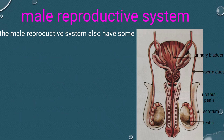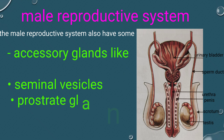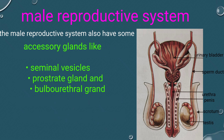The male reproductive system also has some accessory glands like the seminal vesicles, prostate gland, and bulbourethral gland. Secretions of these glands constitute the seminal plasma, which is rich in fructose, calcium, and certain enzymes.